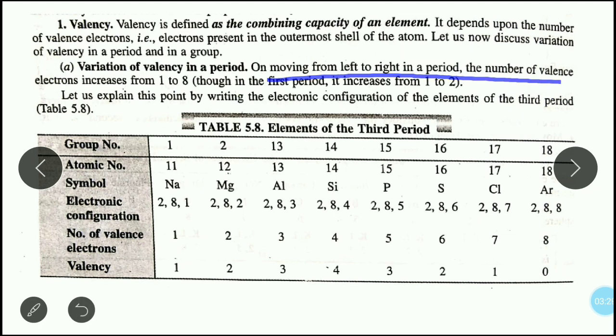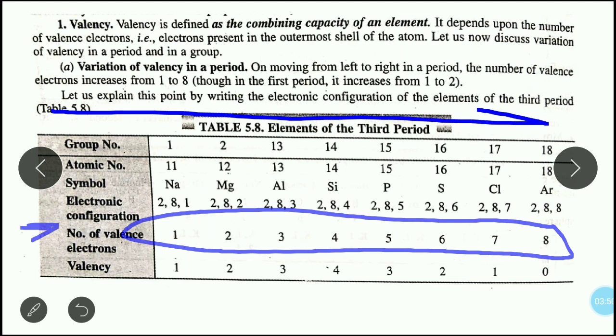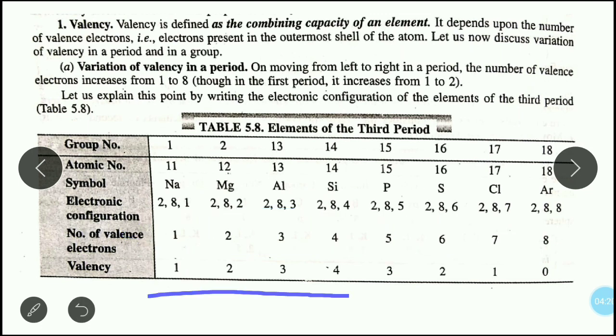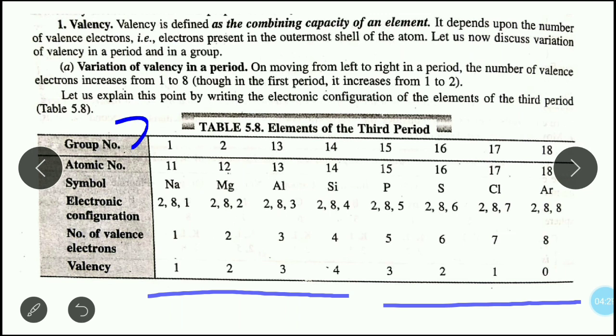In periods, when we go left to right, the number of valence electrons increases from 1 to 8. As you can see, valence electrons 1 to 8 increase continuously. Valence electrons are electrons present in the outermost shell. This trend we can see in the period going left to right. The valence electrons are in the same shell - you can see here, shell 3 is the same shell. But the valence electrons are increasing.